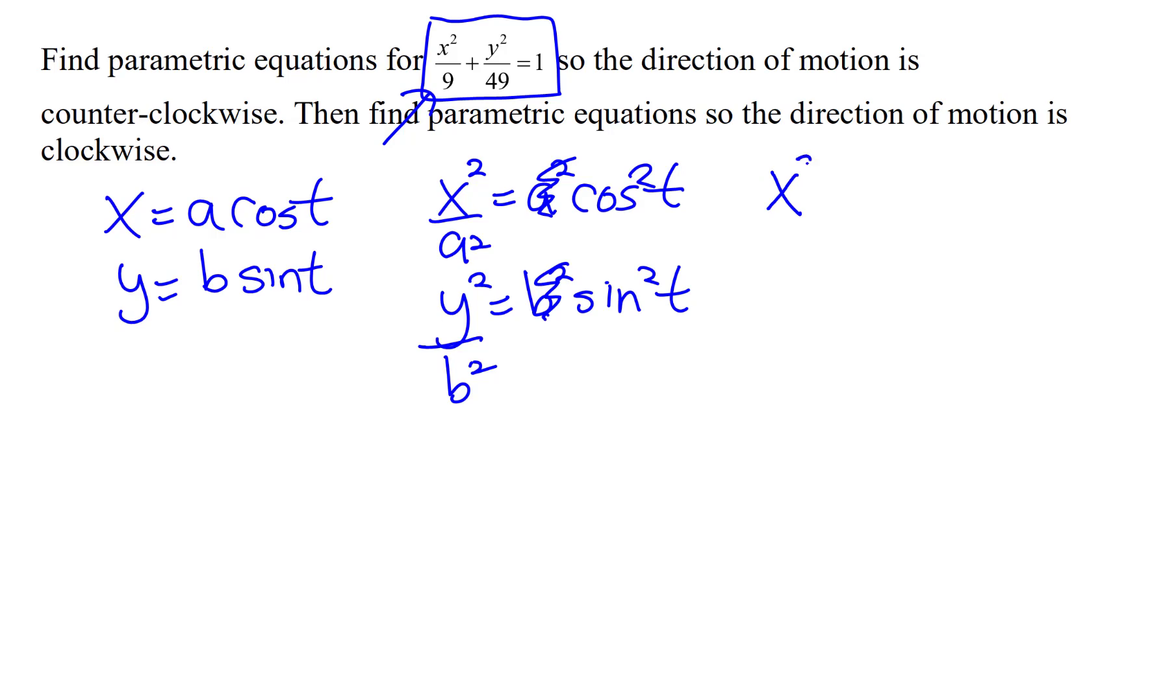So it's going to be x squared over 3 squared, a must be 3, and this one's going to be y squared over 7 squared. And then I have cosine squared plus sine squared. So what I'm going to do now that this is cosine squared and sine squared, I'm going to add those together.